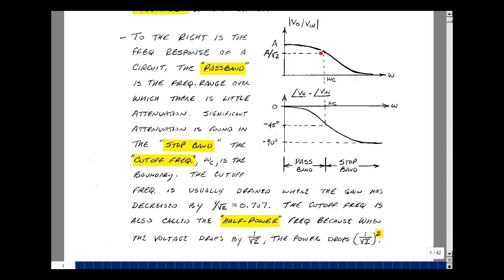This frequency range here, where we have very little attenuation, referred to as the pass band. The frequency range where we have a lot of attenuation, referred to as the stop band. The cutoff frequency is where these two come together. We usually define that to be the point where the gain is dropped by 1 over the square root of 2.